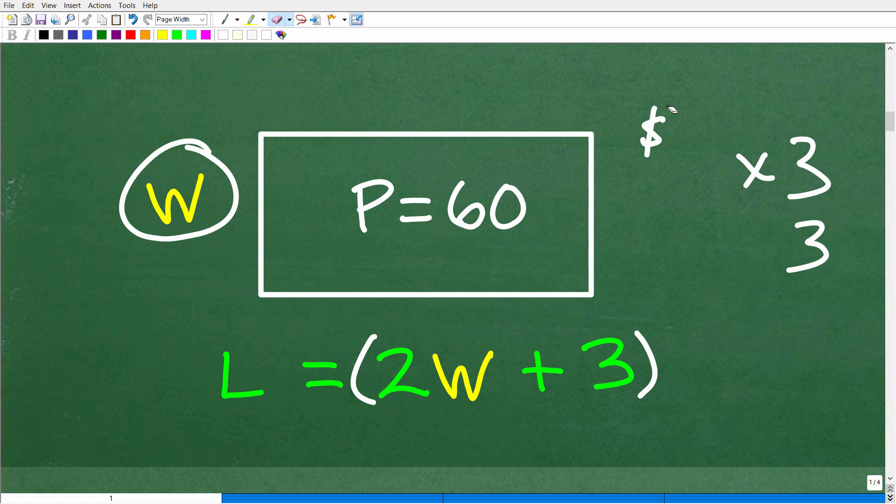Hopefully this makes sense. This is the first part of figuring out this problem. The second part is that we have this information, which is going to be critical, that the perimeter of this rectangle is 60 units. So what does perimeter mean? The perimeter of any object is the distance around the object. If we wanted to calculate the perimeter of this rectangle, we would add all four sides to get 60.